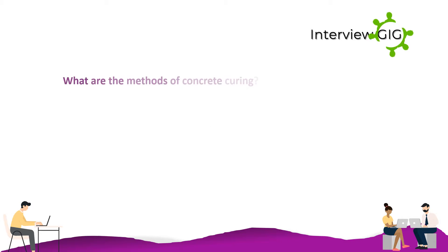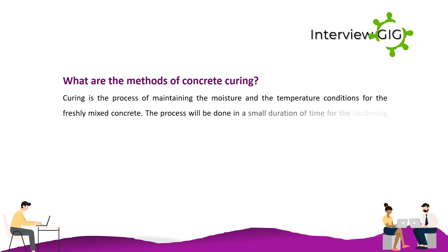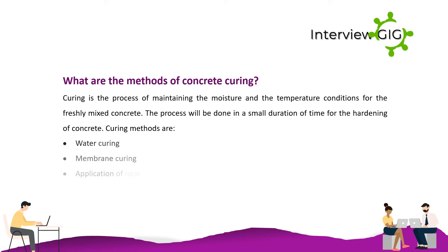What are the methods of concrete curing? Curing is the process of maintaining the moisture and temperature conditions for freshly mixed concrete. The process is done over a short duration for the hardening of concrete. Curing methods include water curing, membrane curing, application of heat, and wet covering of the surface.